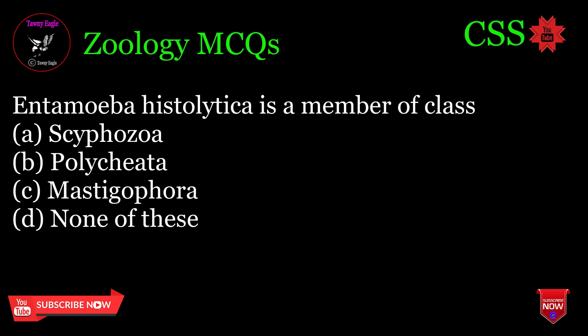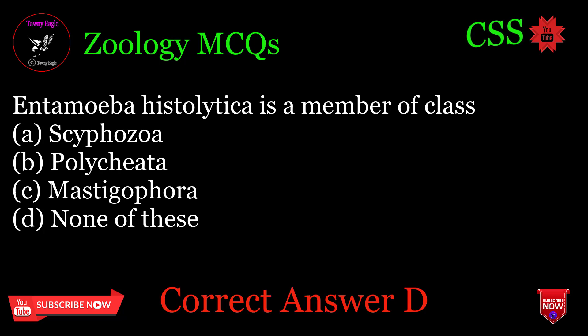Entamoeba histolytica is a member of class: A. Cyphozoa, B. Polychaeta, C. Mastigophora, D. None of these. Correct answer: D.